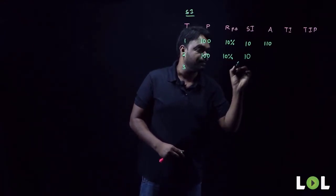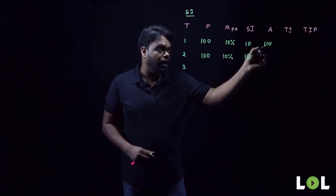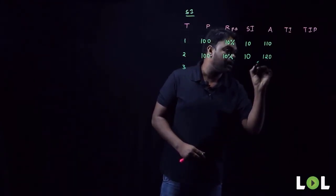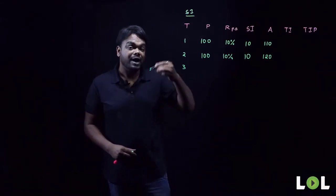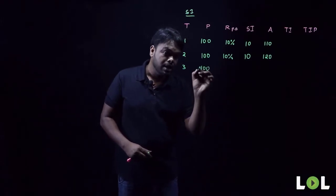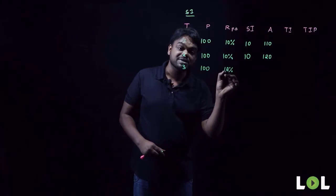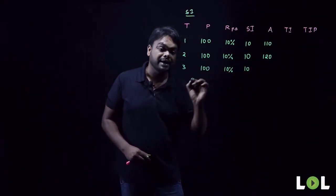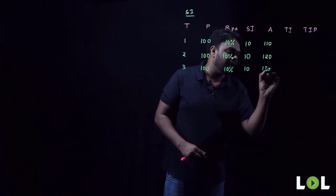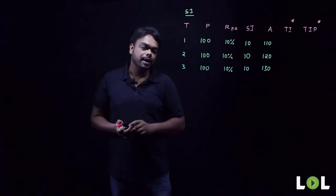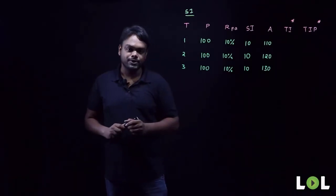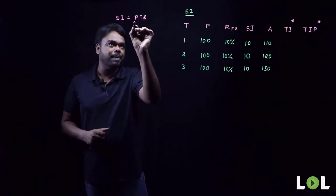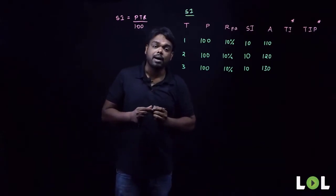In the second year, 10 percent of 100 is again rupees 10. At the end of year one I owed 110, so now with 10 more rupees I owe 120 rupees. For the third year, again 10 percent of 100 is rupees 10. At the end of year two I owed 120, so at the end of year three I return 130 rupees. During school or college, simple interest was always calculated using the formula SI = PTR/100, which is commonly used by students.